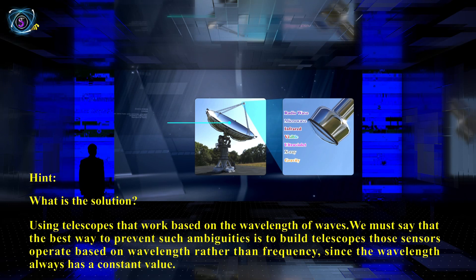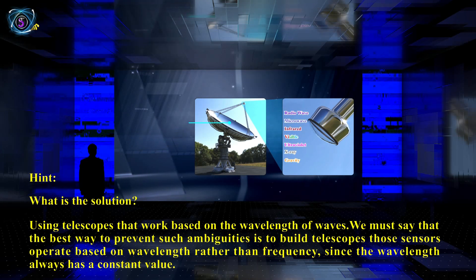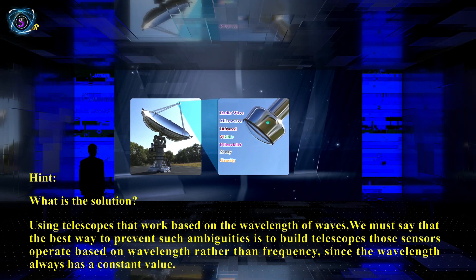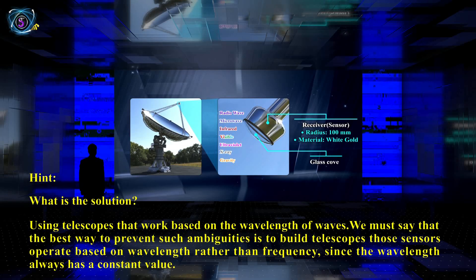What is the solution? Using telescopes that work based on the wavelengths of waves. The best way to prevent such ambiguities is to build telescopes whose sensors operate based on wavelengths rather than frequency, since wavelength always has a constant value.